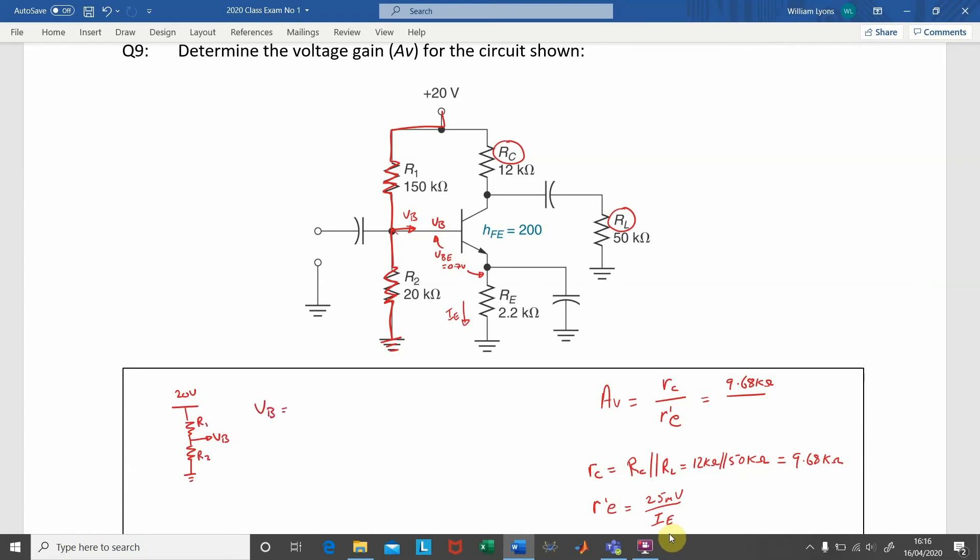So, we can use the voltage divider formula to calculate the value for VB. And that's given by the voltage supply Vs, multiplied by R2 divided by R1 plus R2.